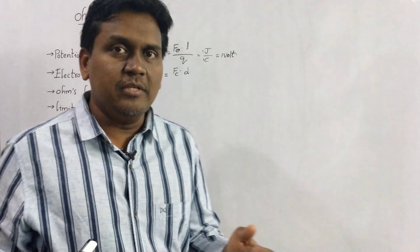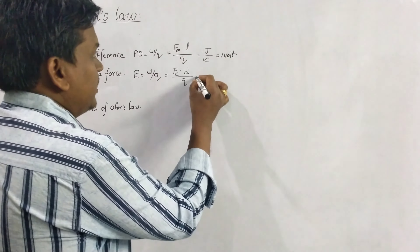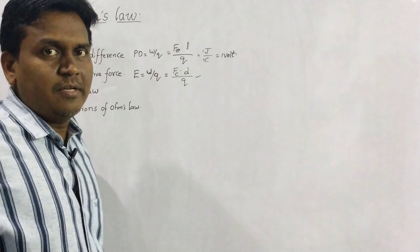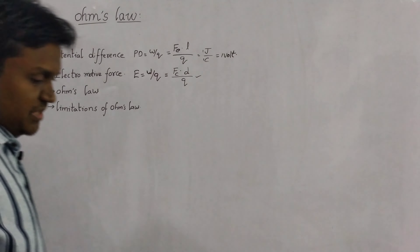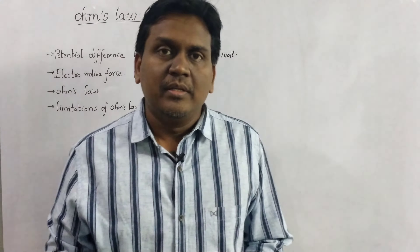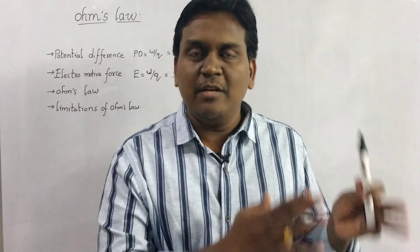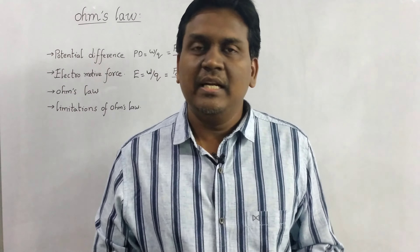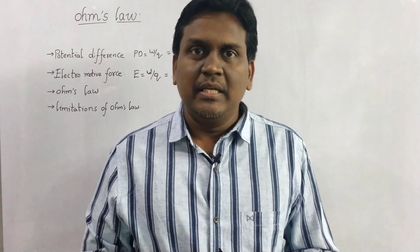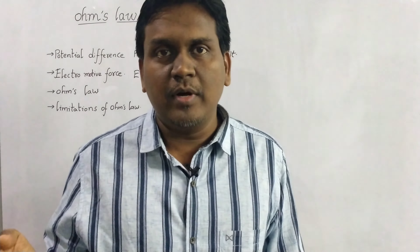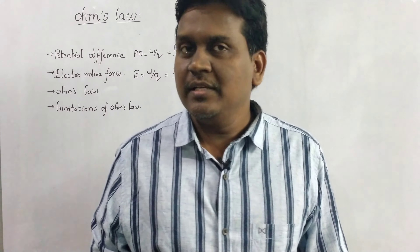The work done by a unit charge. So we can write potential difference as W upon Q, where W is the work and Q is the charge. Here we know that work W equals force into displacement. The force acting is the electric force Fe, and the displacement is the length of the conductor. So potential difference is Fe into L upon Q.